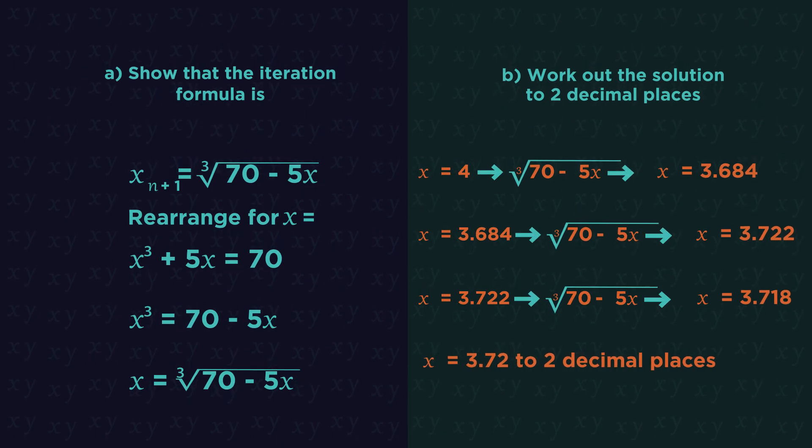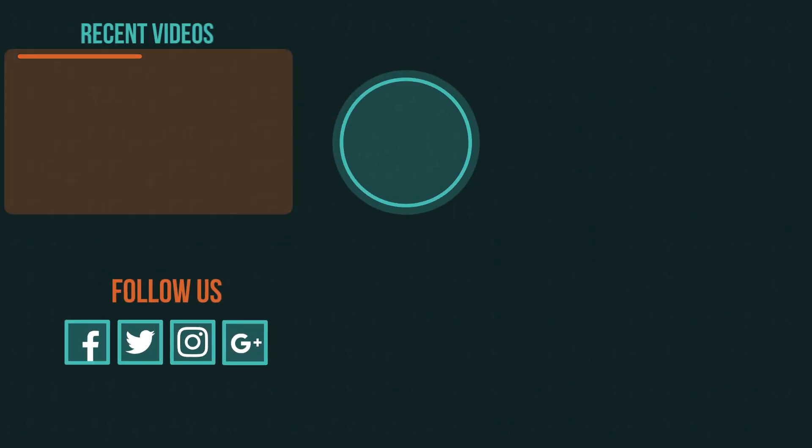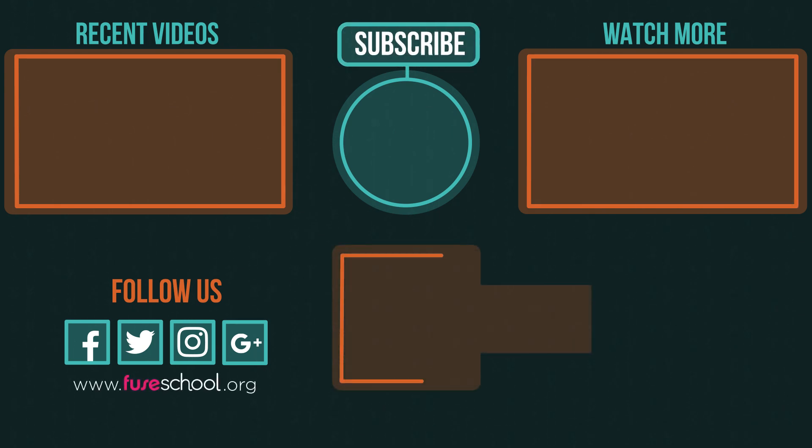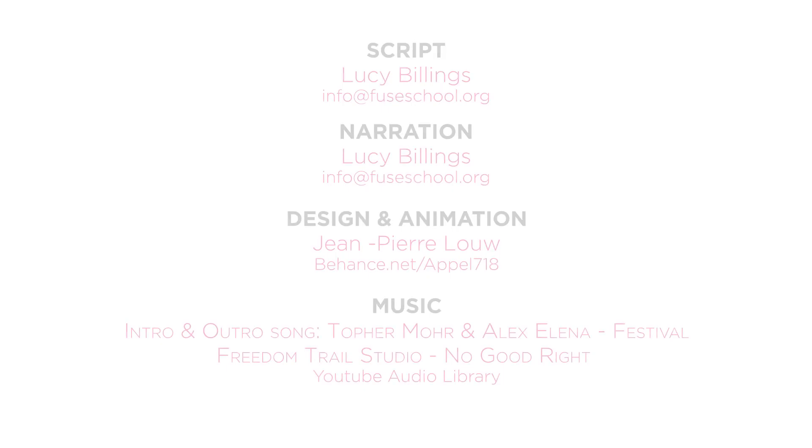And that is all there is to it. Iteration is just another way of solving equations using a repeated cycle. You just keep going until your input value matches your output value. If you liked the video, give it a thumbs up and don't forget to subscribe. Comment below if you have any questions. Why not check out our Fusco app as well. Until next time.